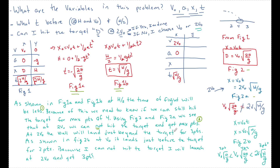At two v naught, the ball will land just beyond the target for three points. As shown in Figure 2b, at v naught it lands just before the target for two points. Stating where it lands at two v naught earned one point, and stating where it lands at v naught earned another point. Because I cannot hit the target, I will launch at two v naught and get three points. The last point was just for making this a clear and concise paragraph.